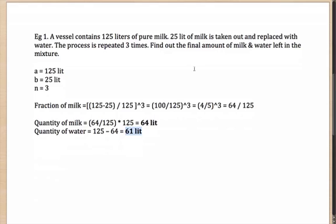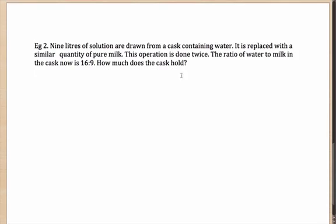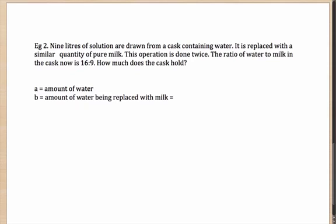Let us look at something a little more difficult. Here, a 9-liter solution is drawn from a cask containing water and replaced with a similar quantity of pure milk. So originally we have A as the amount of water, out of which 9 liters is drawn out and replaced with milk. So B equals 9 liters, and the process happens twice. What is given to us is that the ratio of water to milk is 16 is to 9.